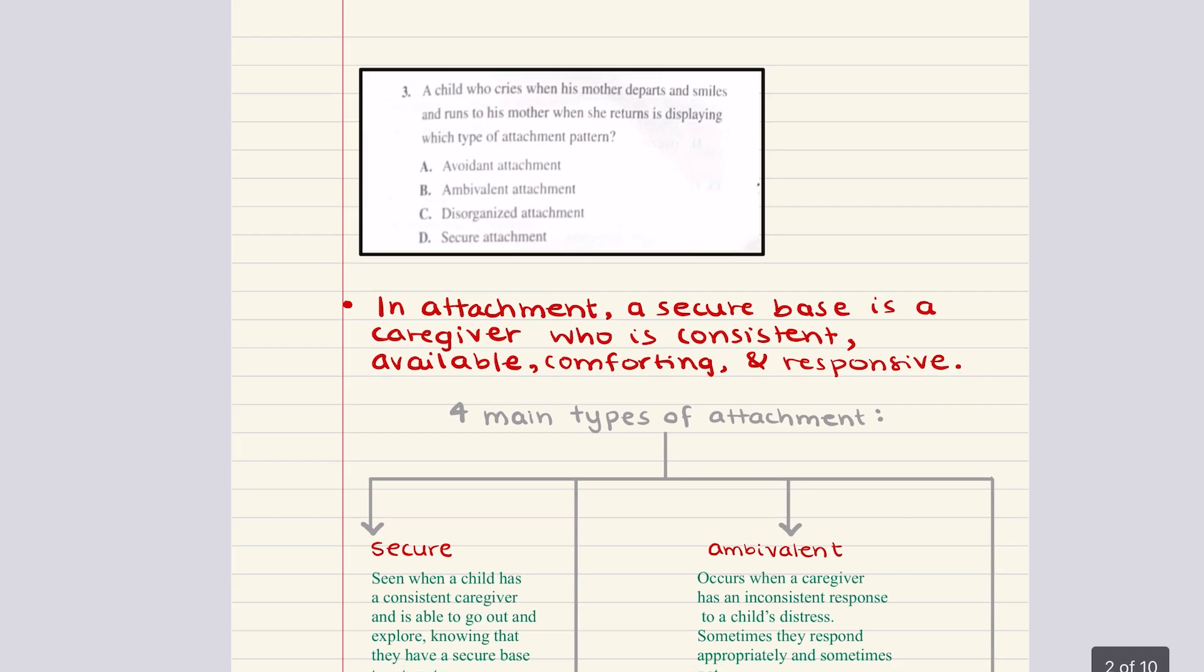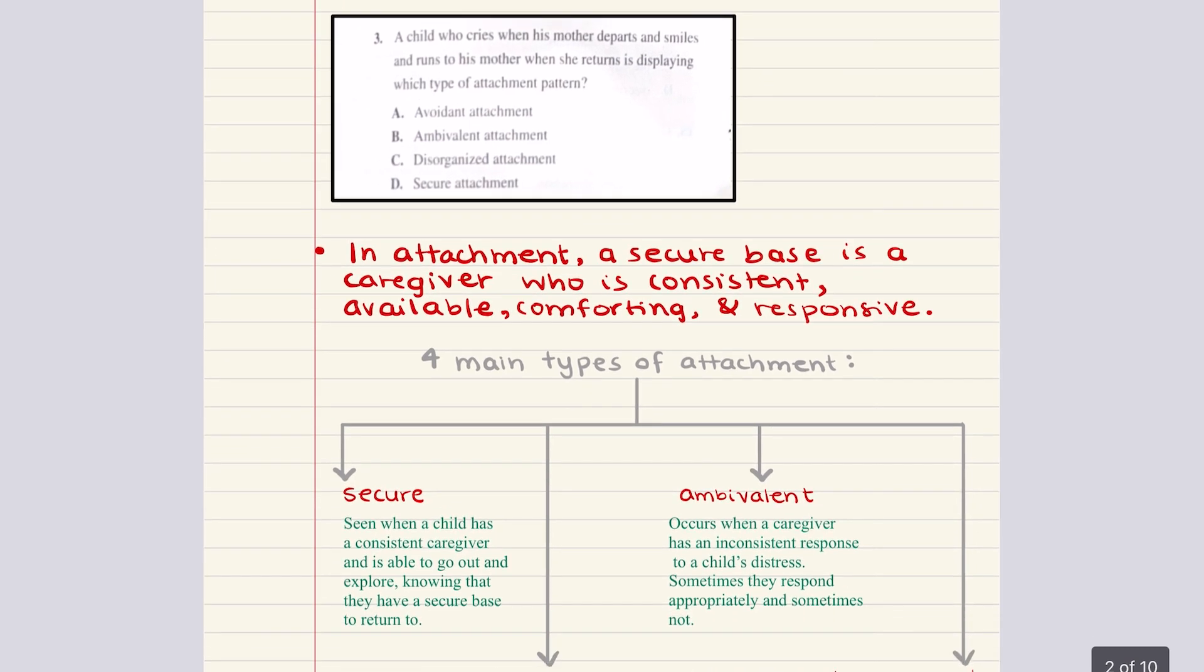Let's move into problem three. Problem three says a child who cries when his mother departs and smiles and runs to his mother when she returns is displaying which type of attachment pattern. So let's just quickly review our attachment patterns here. So attachment is an emotional bond to another person. And it usually refers to the bond between a child and a caregiver. And we talked about four types.